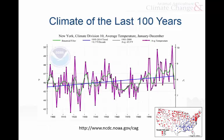If we look at the climate of the last 100 years, this is for New York Climate Division 10, which I think is this climate division. You can see that the annual average temperature has gone through periods of maybe slow increases, some decreases over time, and then since about 1970 or so, a more rapid increase. And that rapid increase since 1970 is very similar to what's going on globally.